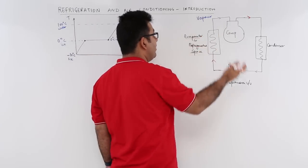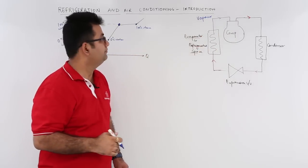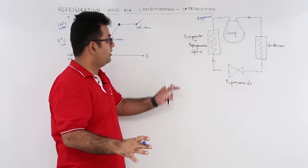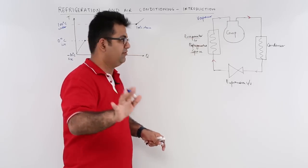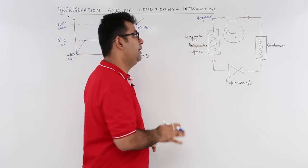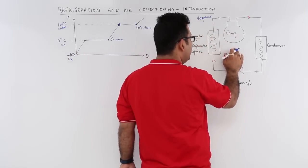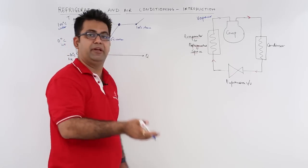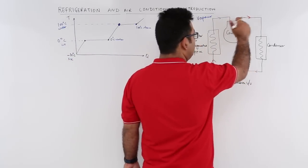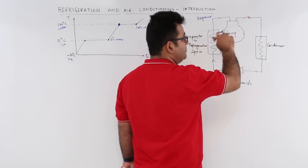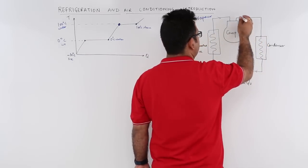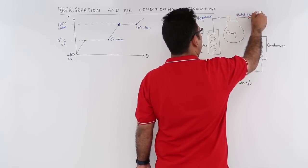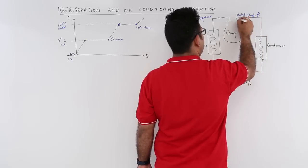This means that you have vapor coming out of the evaporator. When the vapor goes from the evaporator into the compressor, it gets compressed — the pressure gets high and the temperature also gets high. So the state of the vapor which comes out of the compressor is very hot and at very high pressure — hot and high pressure vapor.